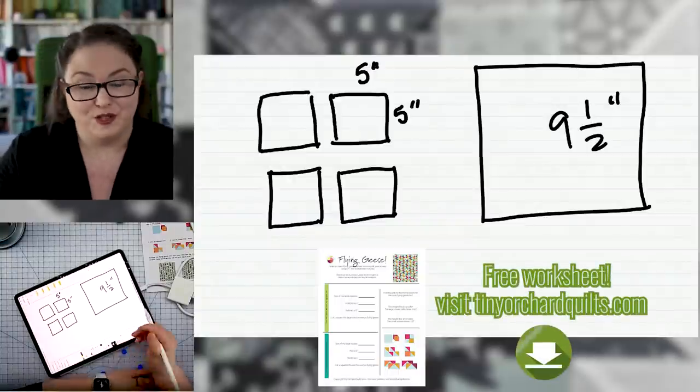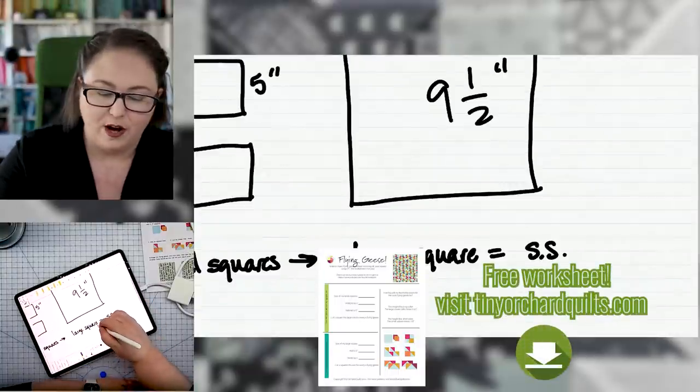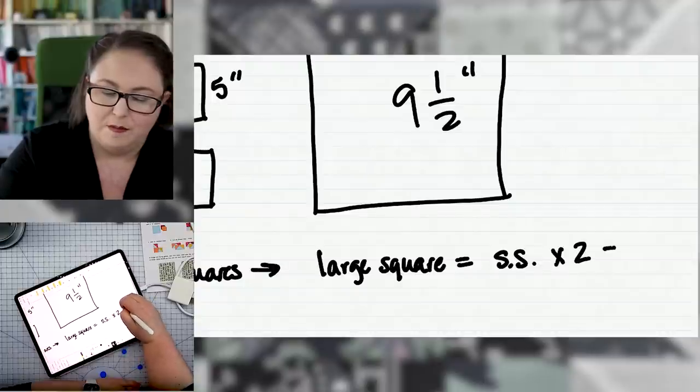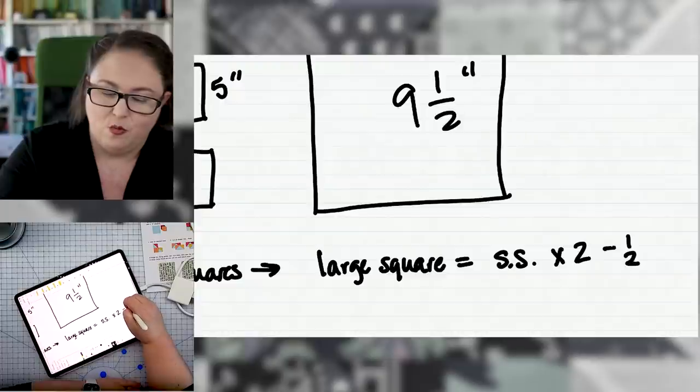So if you are starting with small squares, your large square will equal your small square times two minus one half.